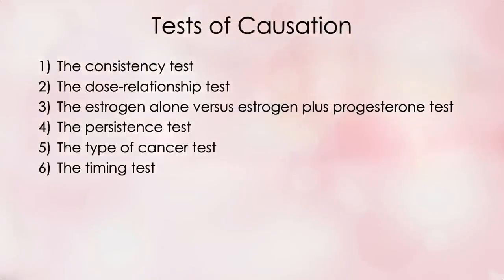There are six separate tests that estrogen has to pass in order to be the cause of endometrial uterine cancer. The first is the consistency test. The second is the dose relationship test. The third is the estrogen alone versus estrogen plus progesterone test. The fourth is the persistence test. The fifth is the type of cancer test. And the sixth is the timing test. Let's put estrogen to the test for each of these.